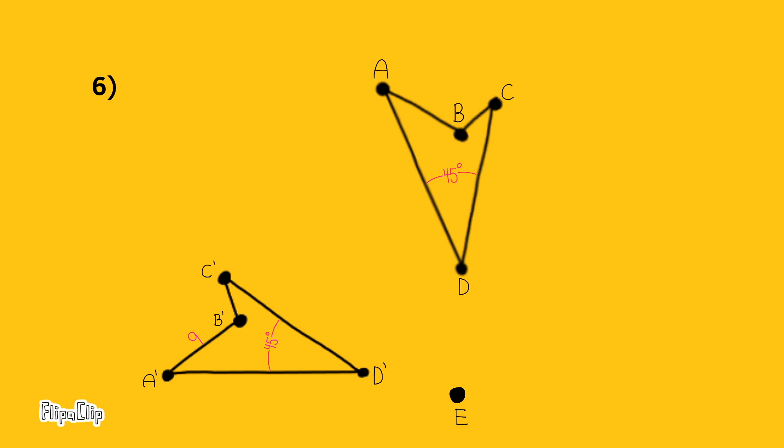The length of side AB is the same as the length of side A'B', and since A'B''s length is 9, or 9 units, then the length for side AB will also be 9 units.